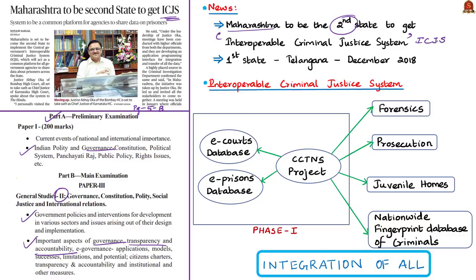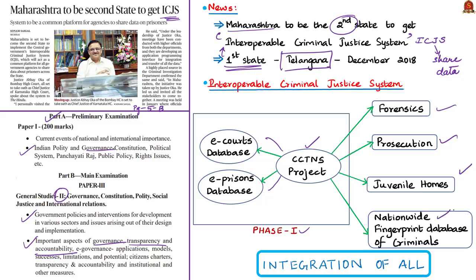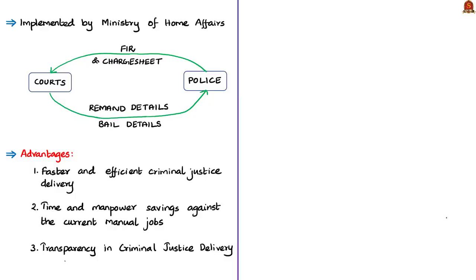ICJS will act as a common platform for all government agencies to share data about prisoners across the state. The first state to implement this system was Telangana in December 2018. ICJS aims to integrate the CCTNS project with e-courts and e-prisons databases in the first phase, and then with other pillars of the criminal justice system — including forensics, prosecution, juvenile homes and a nationwide fingerprint database of criminals — in a phased manner. This project will be implemented by the Ministry of Home Affairs. With ICJS, courts can consume live data of FIR and charge sheets from police.